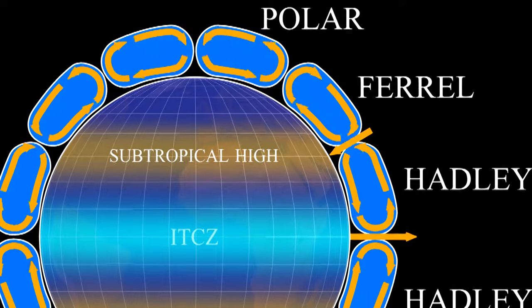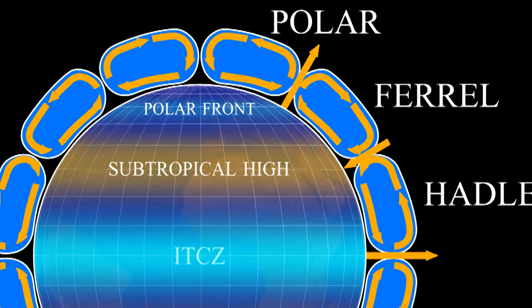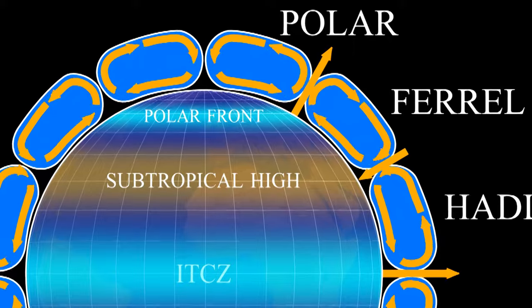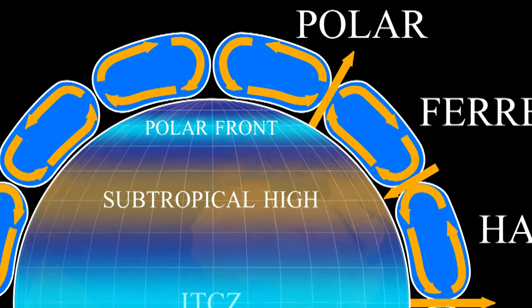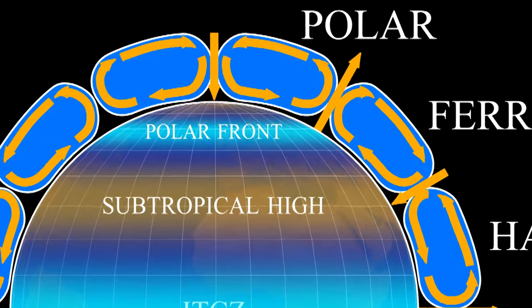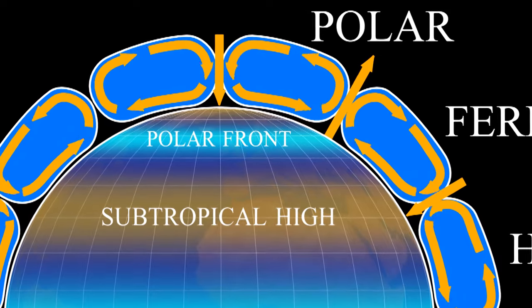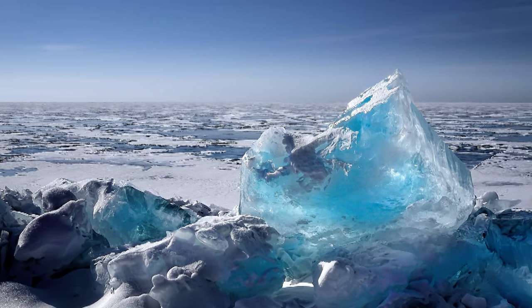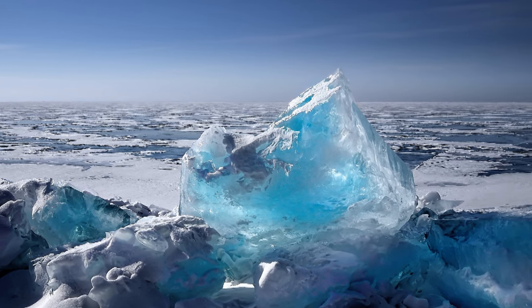Between the Ferrell and polar cells, we have the polar front. The polar front is a wet area with lots of storms. At the top of the polar cell, the air is coming down over the North Pole. Air coming down is very dry. The North Pole has plenty of ice and snow, but it's on the ground — it's rarely falling from the sky because the sky is so dry.